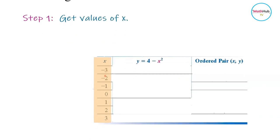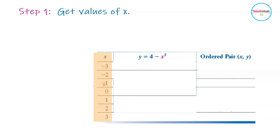Now you're going to select integers for x starting with negative 3 and ending with 3: negative 3, negative 2, negative 1, 0, 1, 2, 3. These are the integers from negative 3 to 3. Then you compute for the value of y.